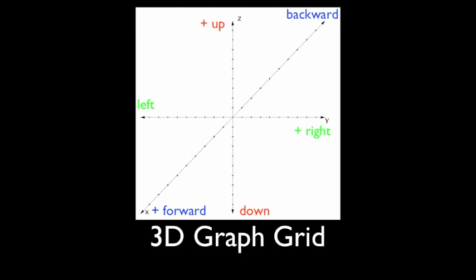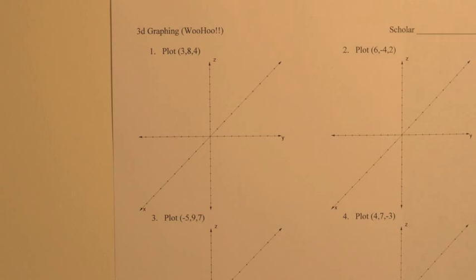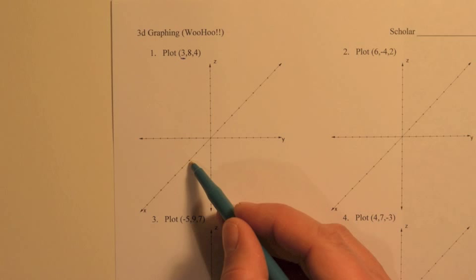So let's graph some points using this information. So first example here, we want to plot the point (3, 8, 4). So first, let's take a look at that 3.